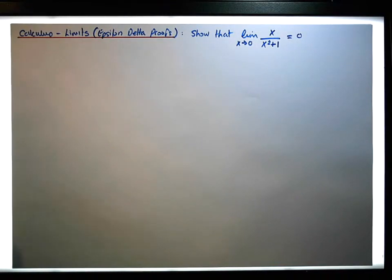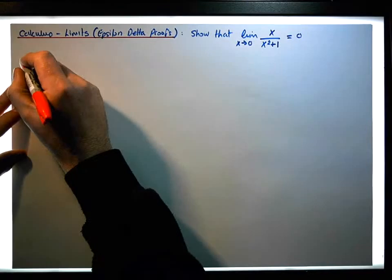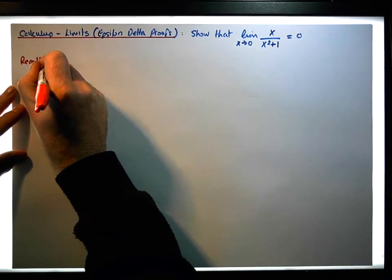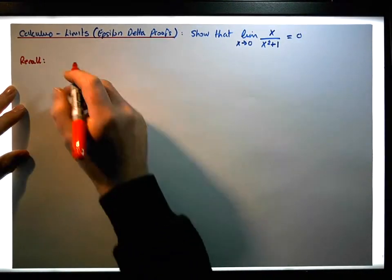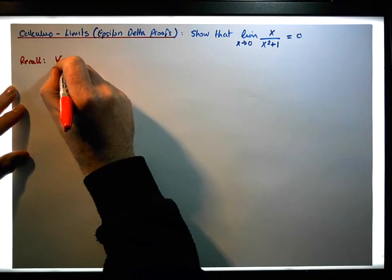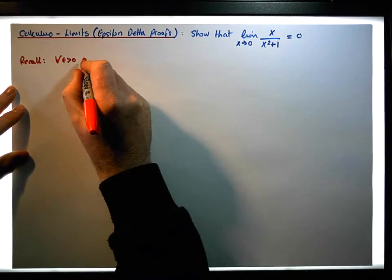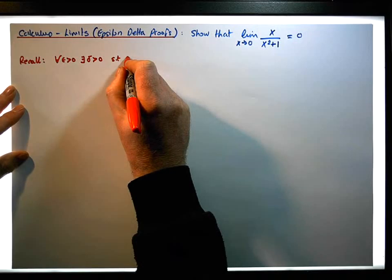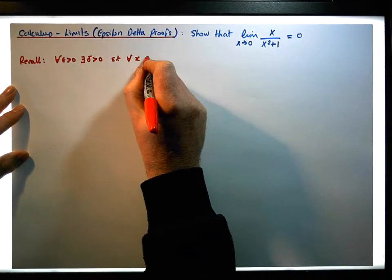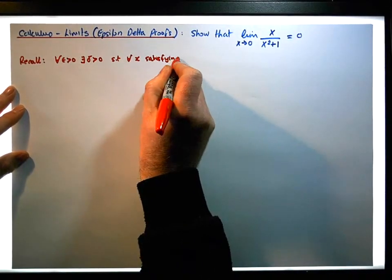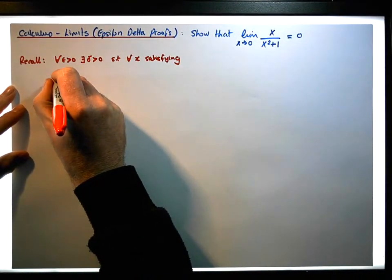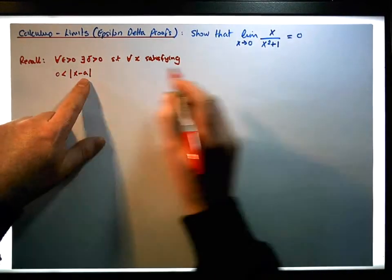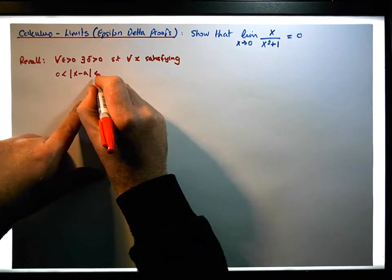Let's recall the epsilon-delta definition of a limit. It says that for each and every epsilon greater than 0, there exists a delta greater than 0, such that for each and every x satisfying the following condition: that 0 is less than the absolute value of x minus a — where a is where the limit is tending to — being less than delta.